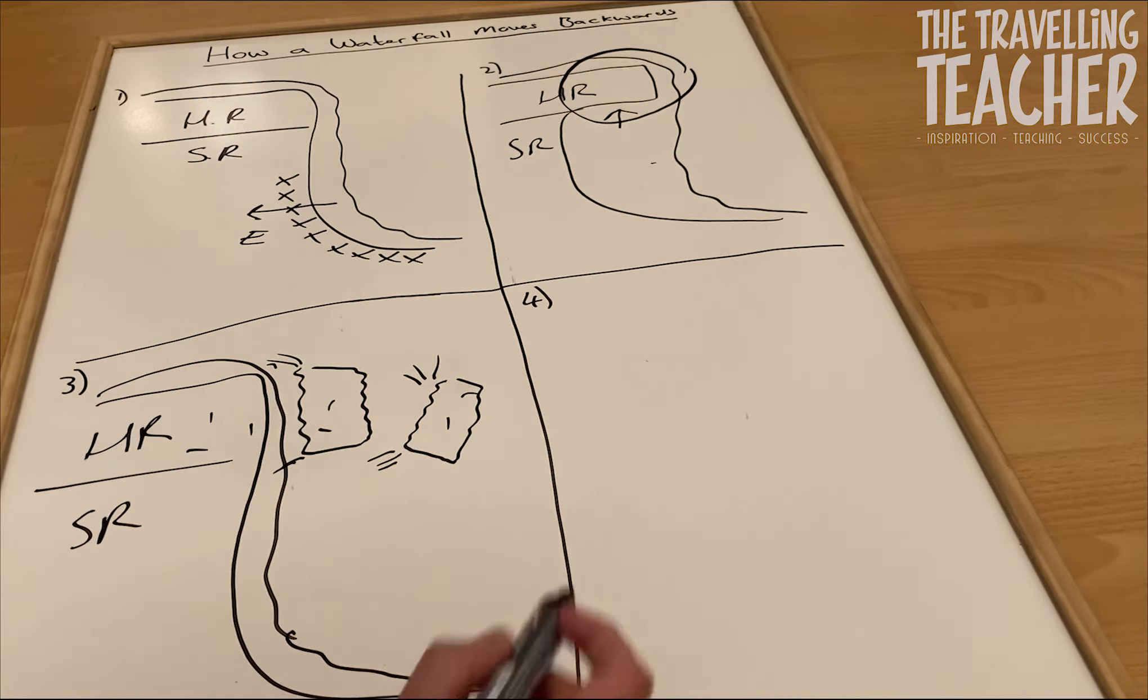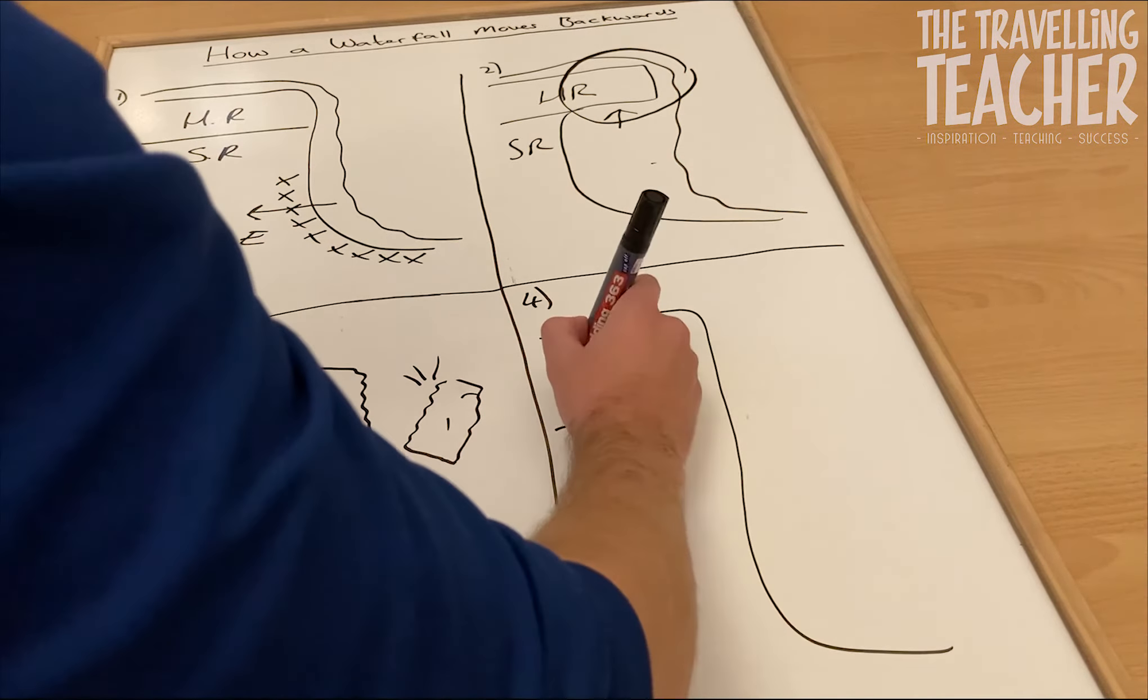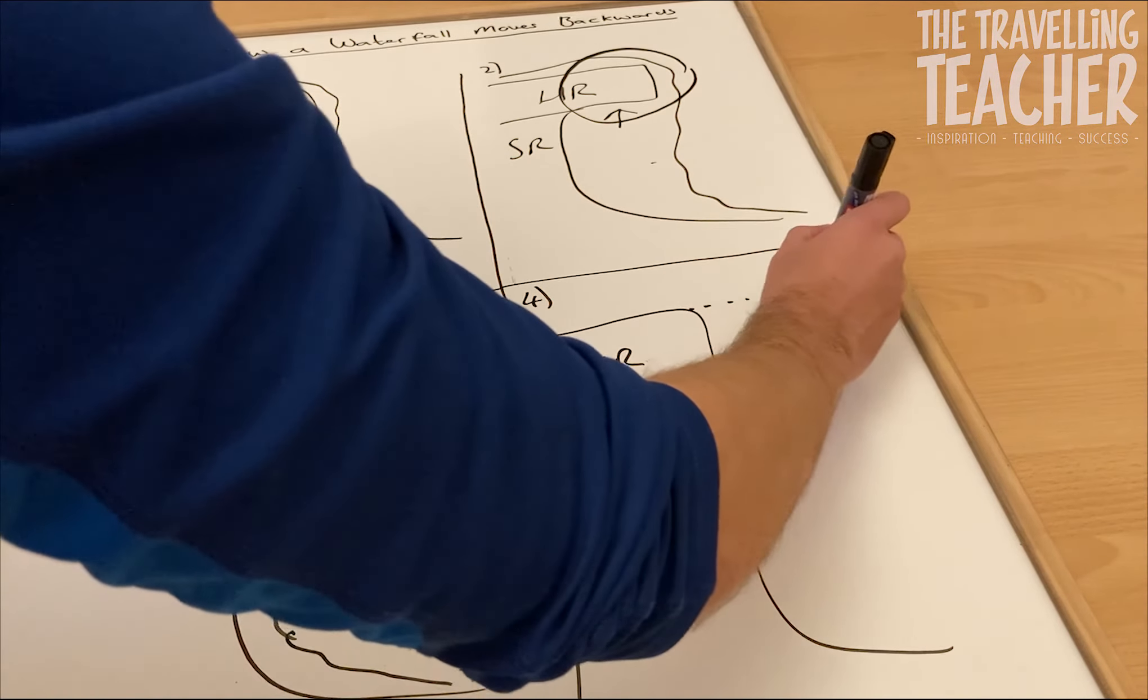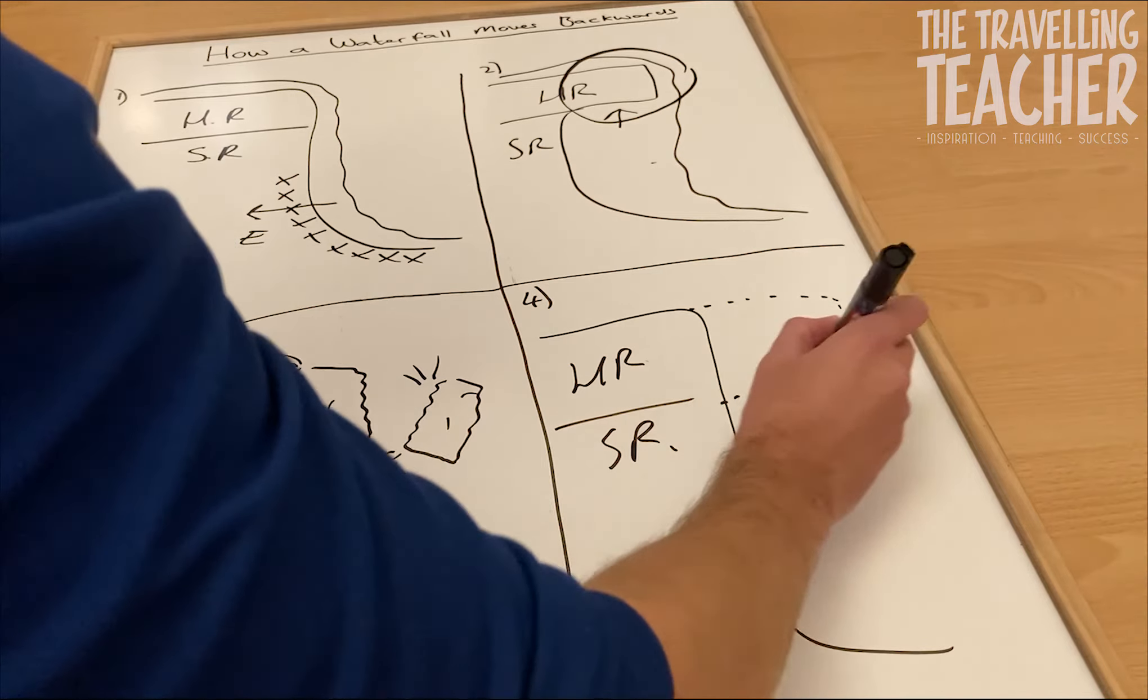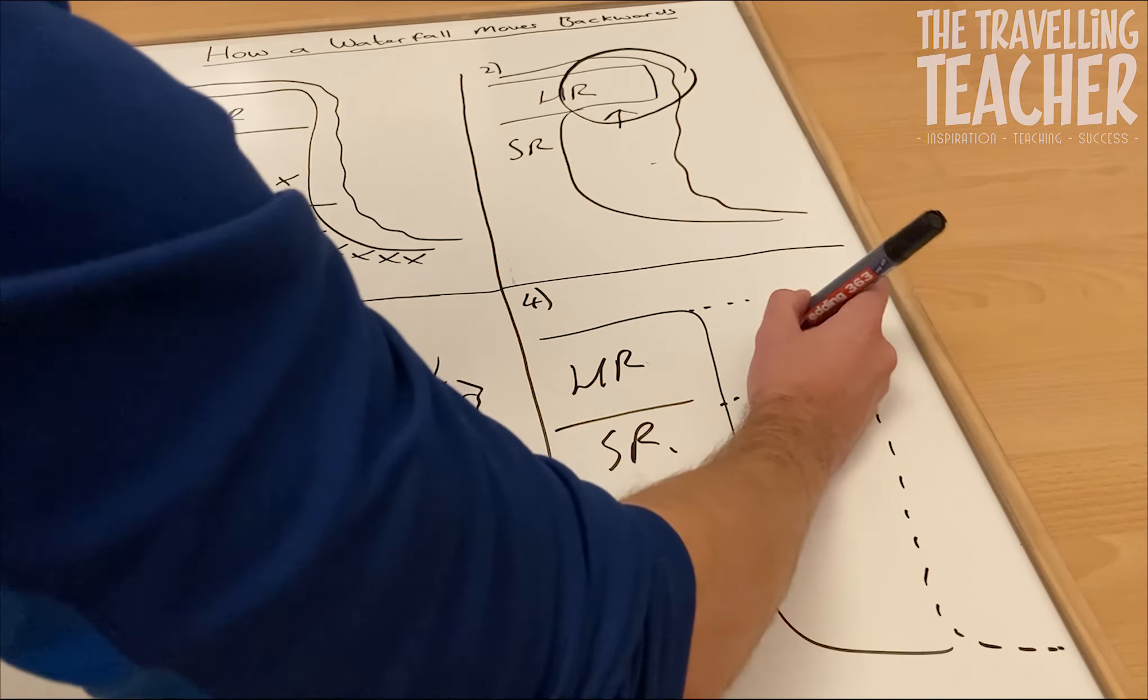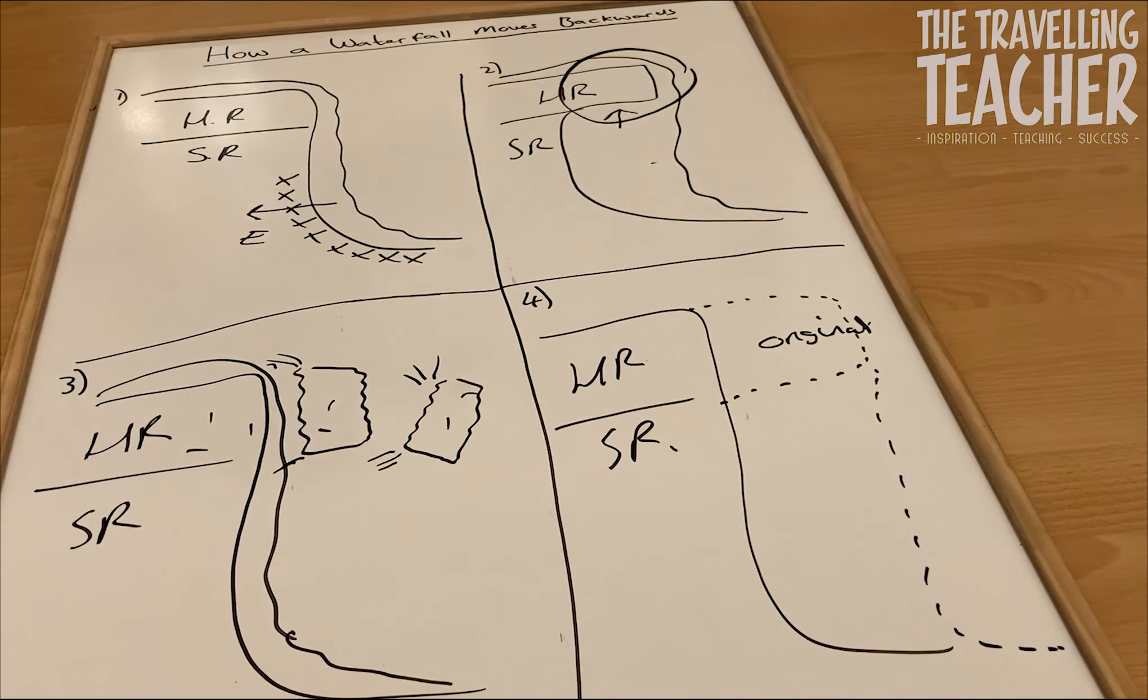And then we move to stage four. We're just going to draw on our waterfall, our hard rock, soft rock. And what we're going to do this time is I'm just going to put on the original position of the waterfall. So this is the original position. So you can see where it originally was.